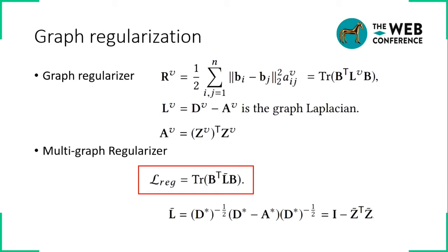We construct graph regularization to maintain the consistency of samples in the embedding space and feature space. Then, we extend the regularizer to multi-graph by the trace of B transpose L bar B, where L bar is the normalized Laplacian.